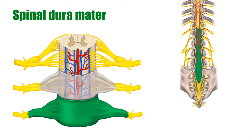The periosteal layer of the cranial dura mater does not extend beyond the foramen magnum, meaning that the spinal dura mater is only composed of the dural meningeal layer, the true dura mater.